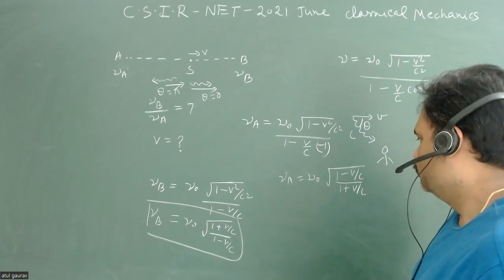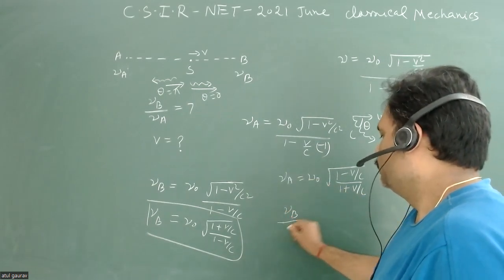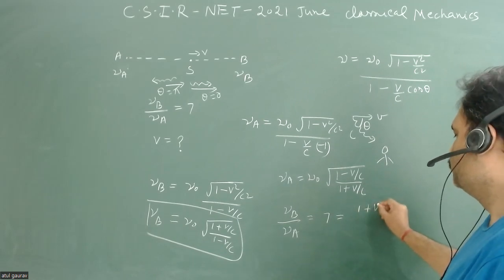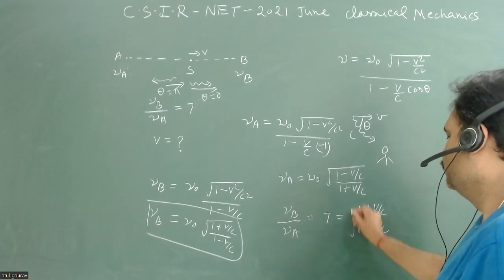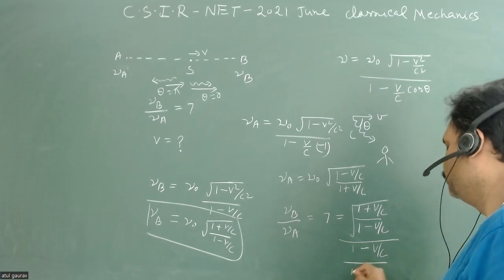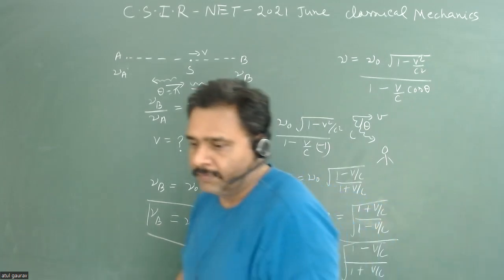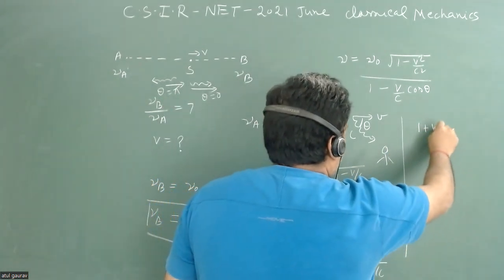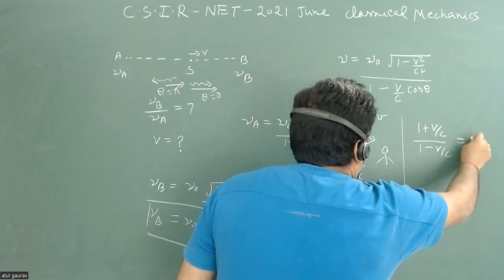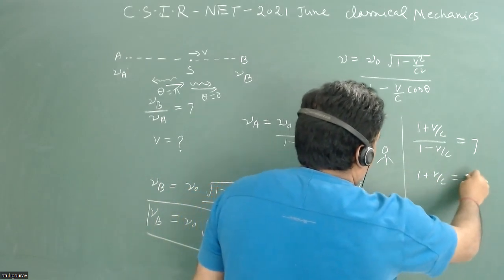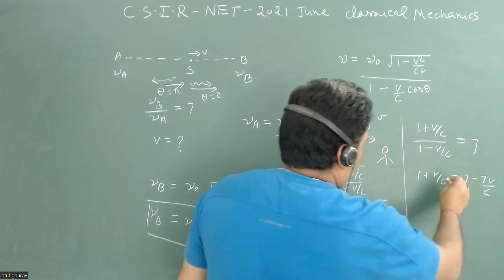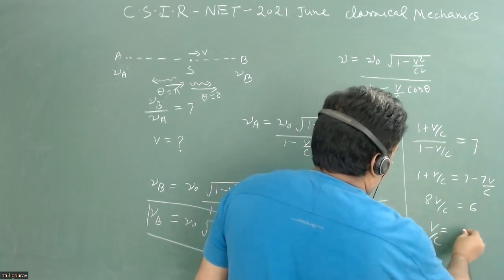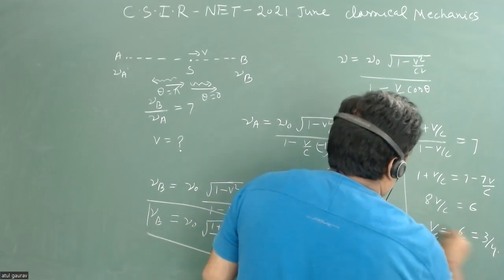Given that ν_b / ν_a = 7, we get (1 + v/c) / (1 - v/c) = 7. Simplifying: 1 + v/c = 7 - 7v/c, so 8v/c = 6, giving v/c = 6/8 = 3/4. So v = 3c/4. This is the answer.